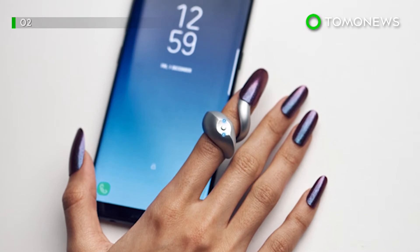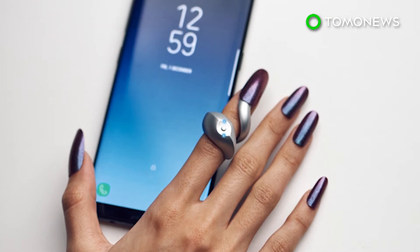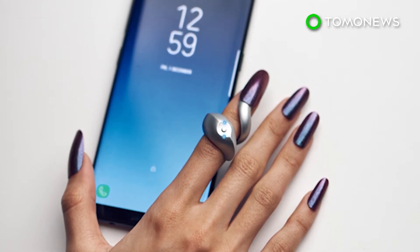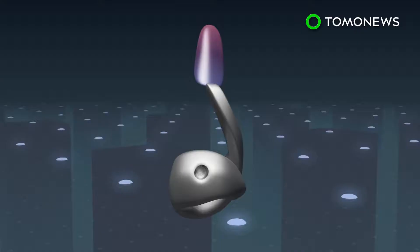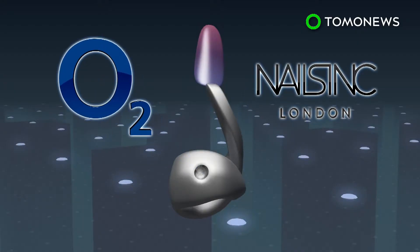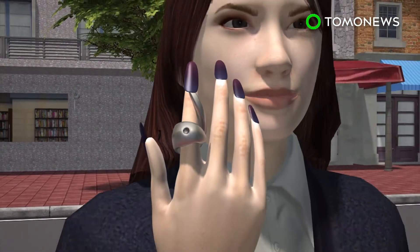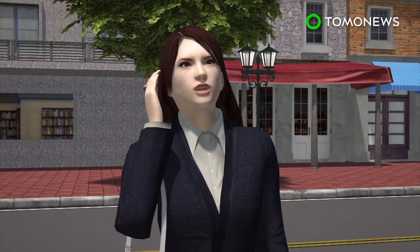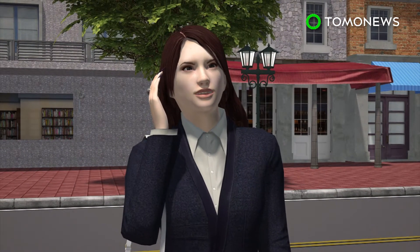British telecom company O2 has unveiled a prototype for a new wearable gadget that bridges the gap between fashion and tech. O2 has teamed up with London beauty brand Nails Incorporated to create the Mobile Nail, a wearable tech nail that can be used as a phone handset.